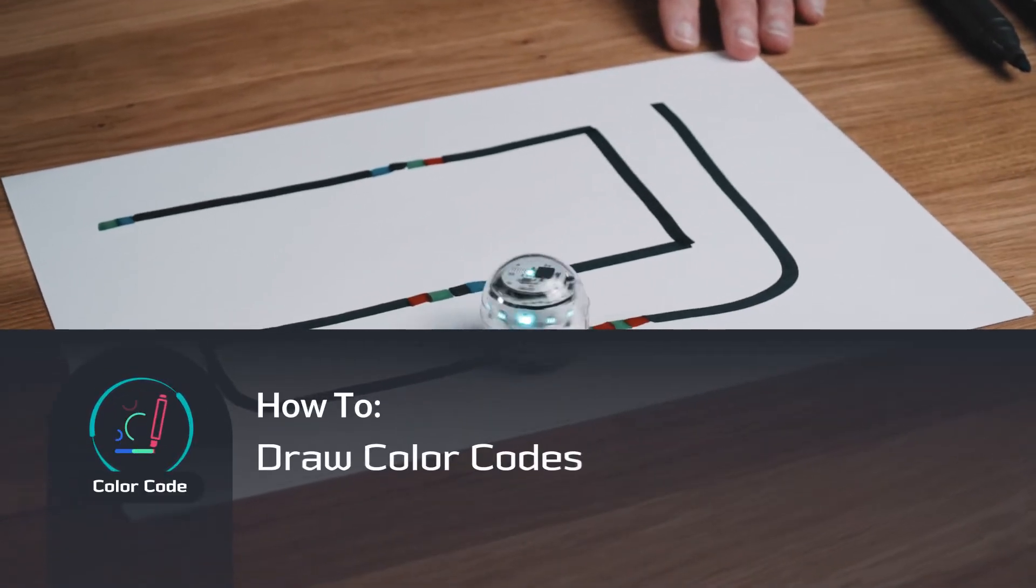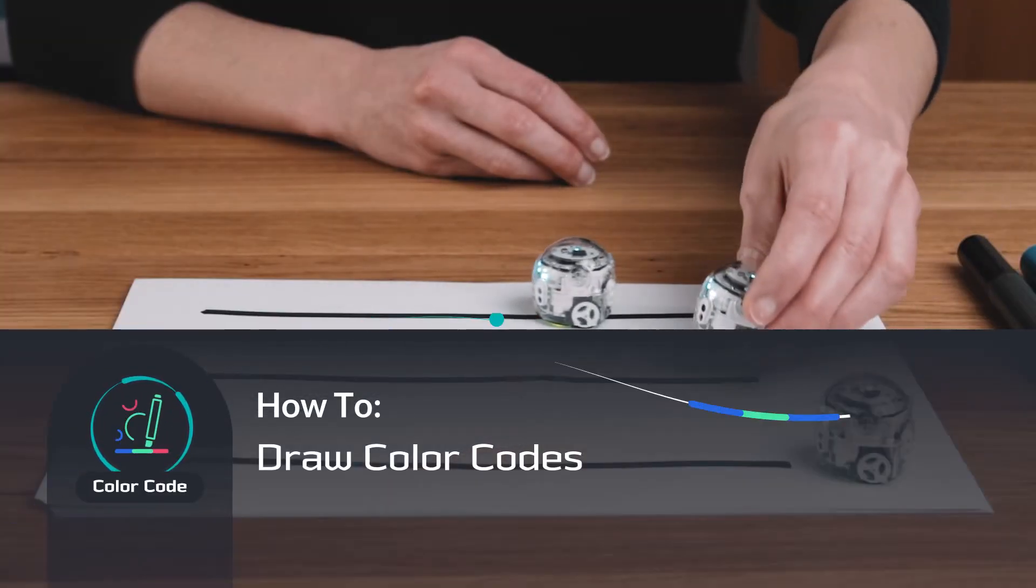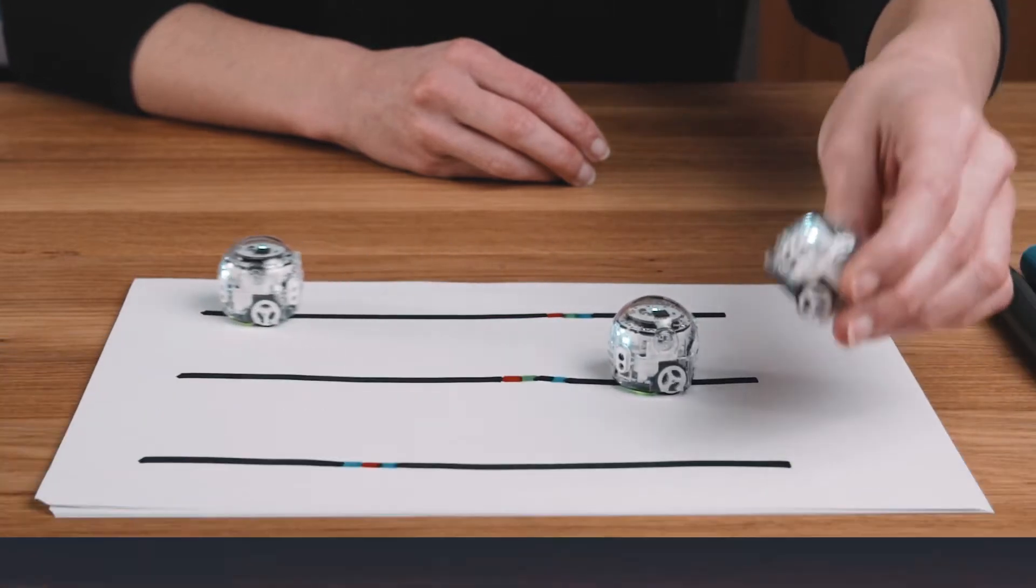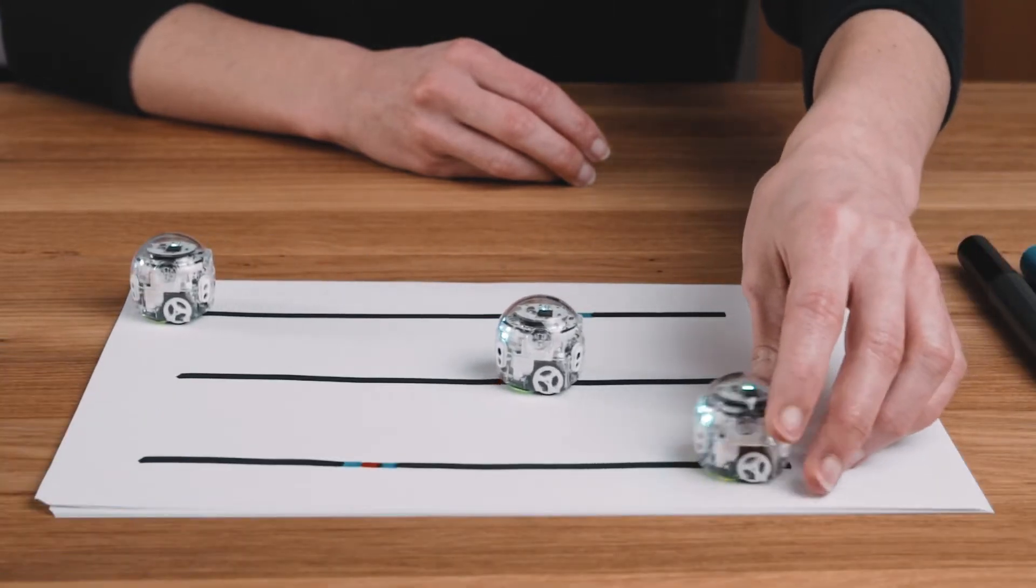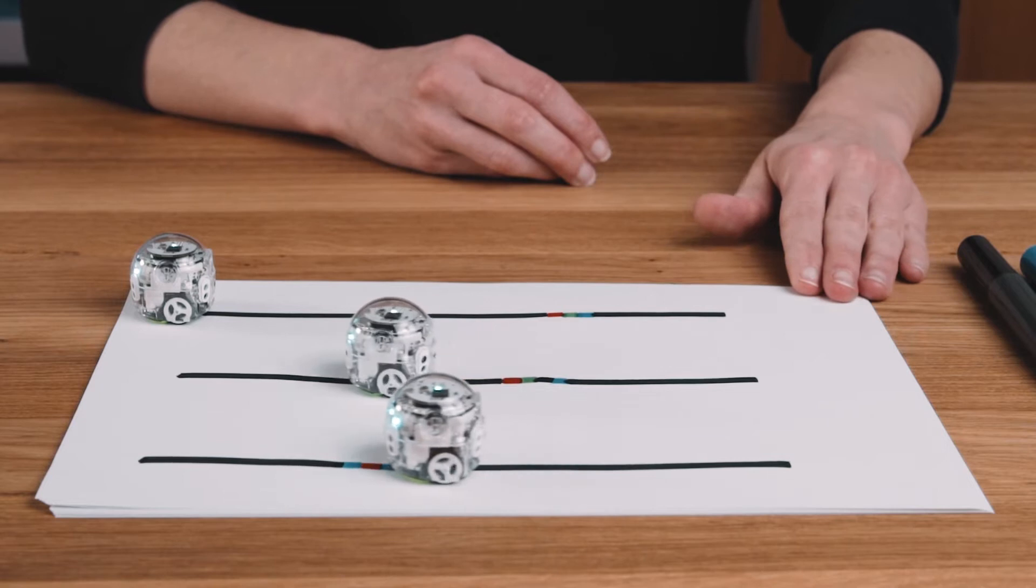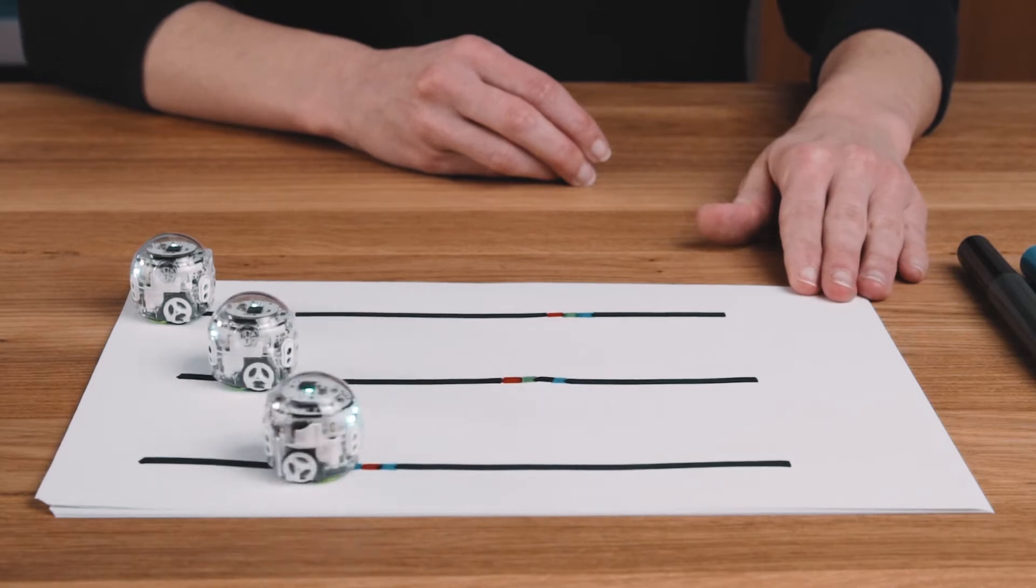Excited for color codes? Thought so! Color codes are sequences of colors that Ozobot Evo understands as commands, so you can control its speed, movements, and direction.